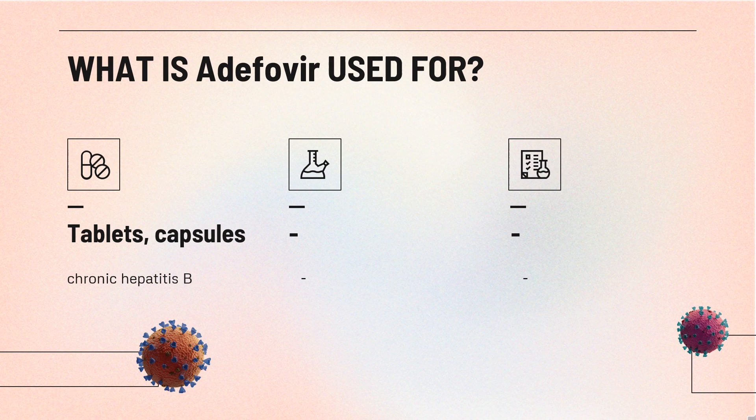Adefovir is indicated for the treatment of chronic hepatitis B in adult patients with evidence of active viral replication and either evidence of persistent elevations in serum aminotransferases, ALT or AST, or histologically active disease. This is based on histological, virological, biochemical, and serological responses in adult patients with HBeAg-positive and HBeAg-negative chronic hepatitis B with compensated liver function, and in adult patients with clinical evidence of lamivudine-resistant hepatitis B virus with either compensated or decompensated liver function.